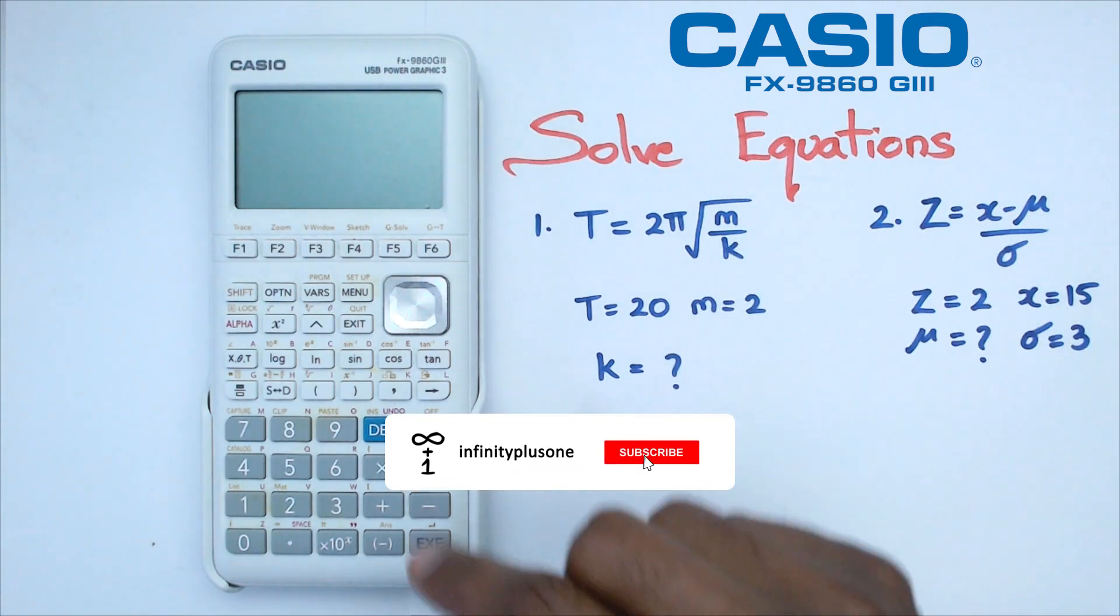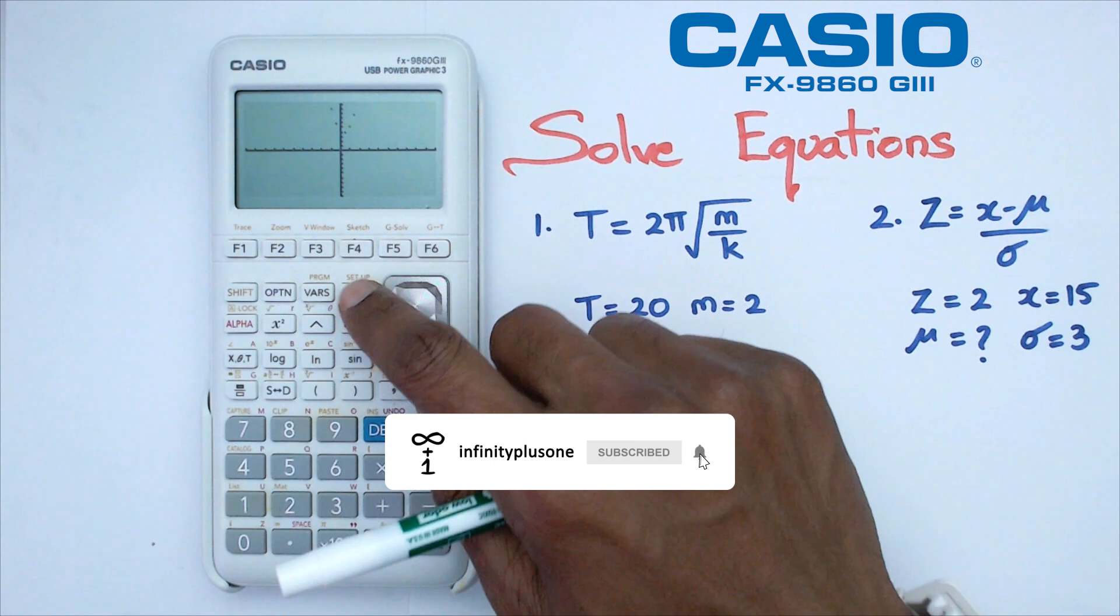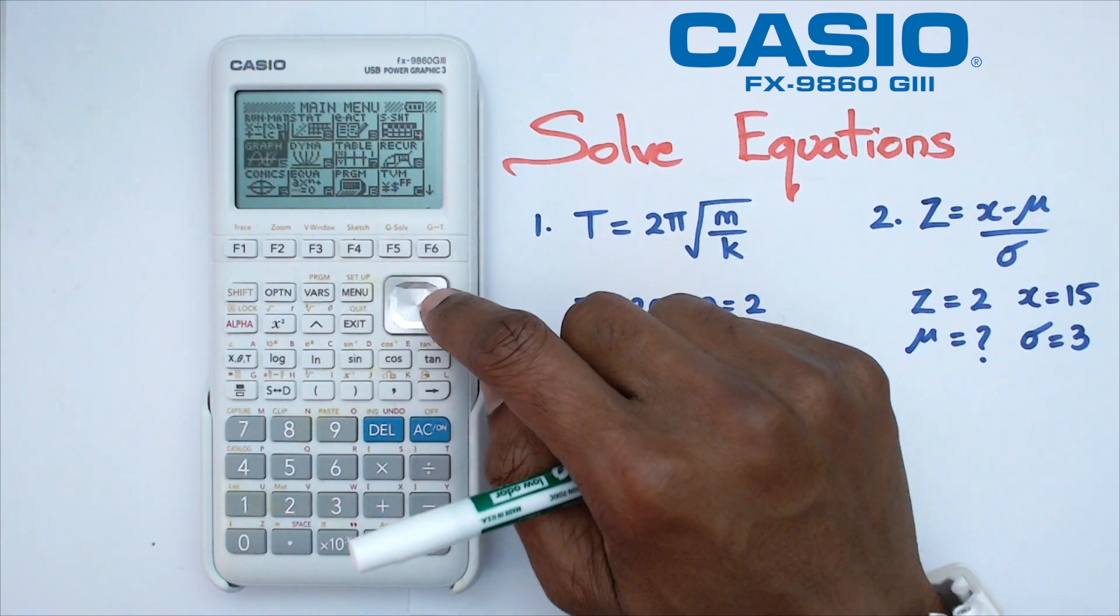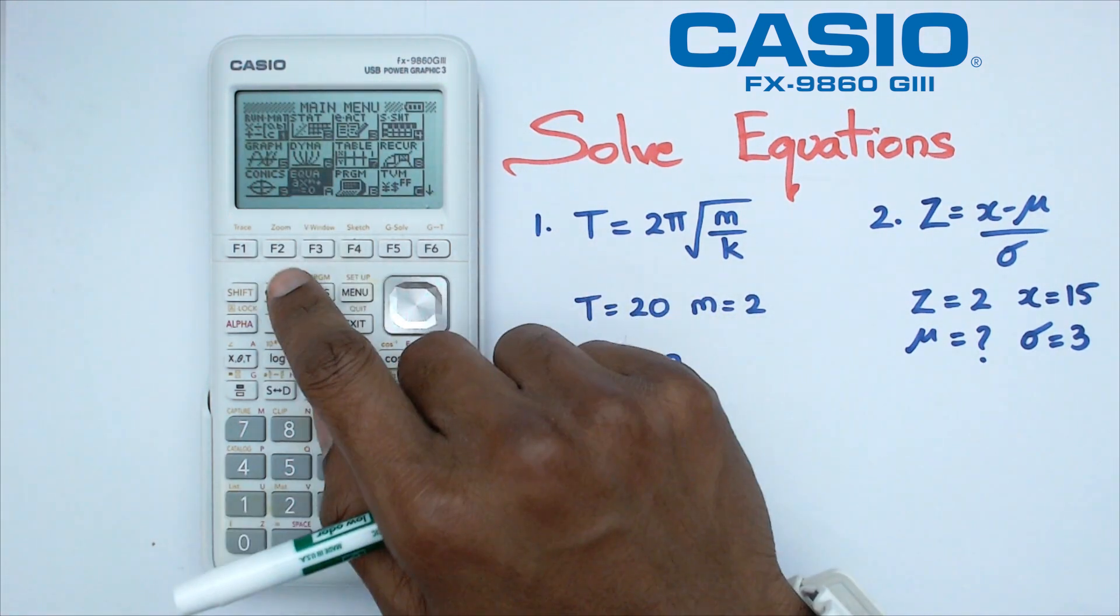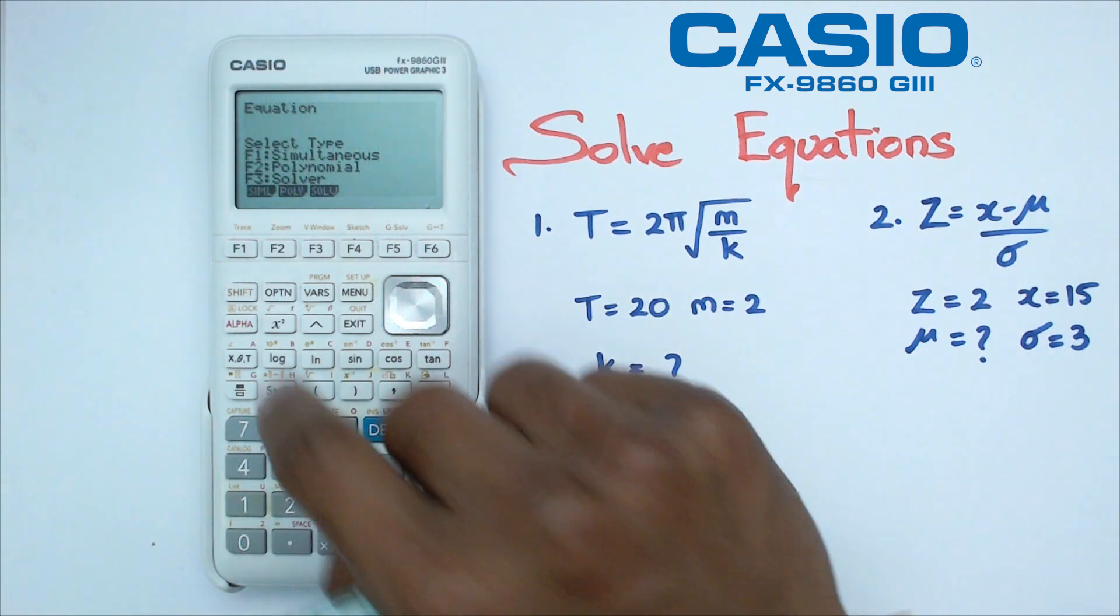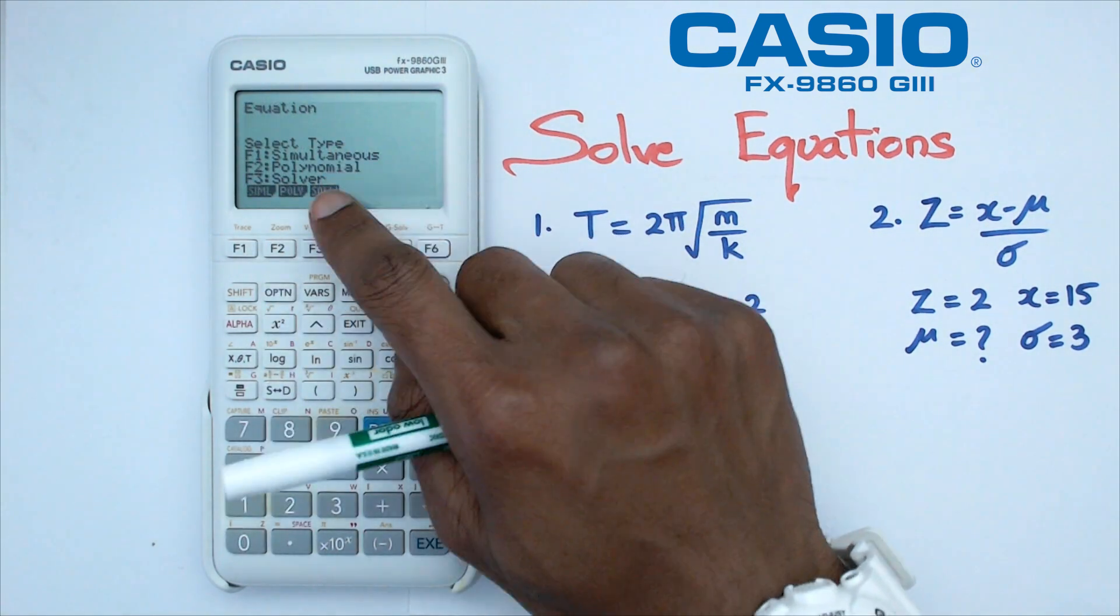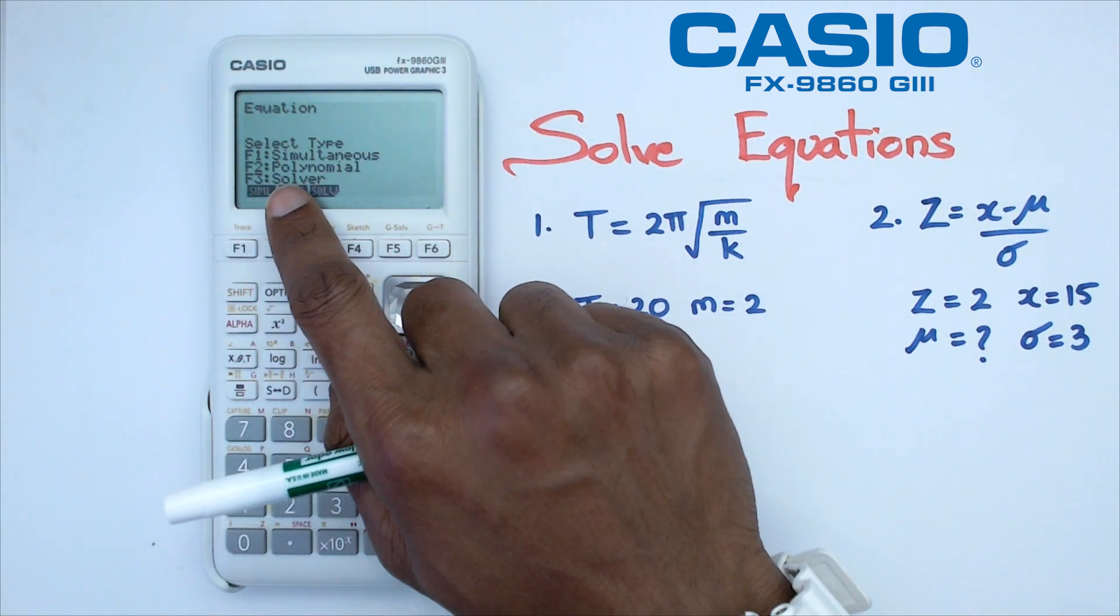The first thing we're going to do is switch on the calculator, go into main menu, and navigate down to equation. We're going to click on equation, and under equation we've got three different menus. We'd like to go to F3, which is the solver.